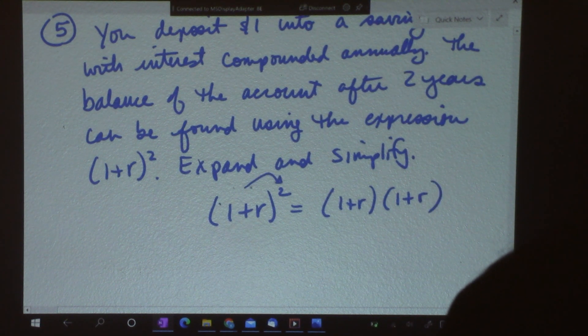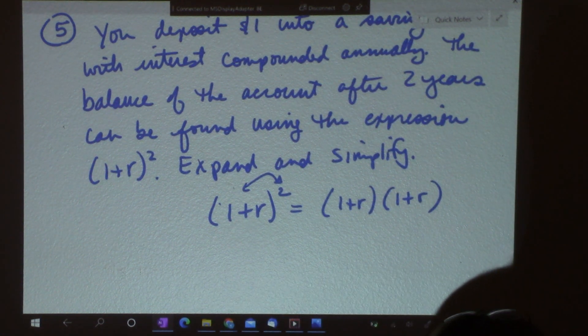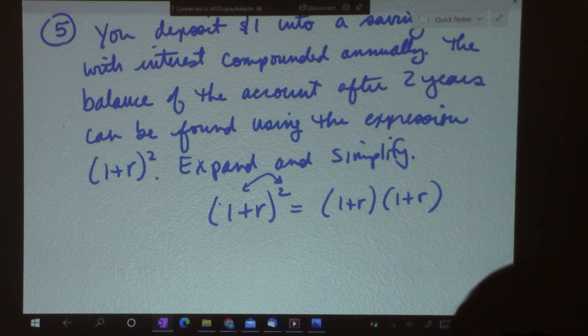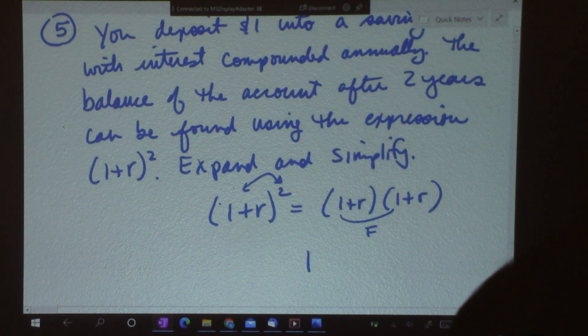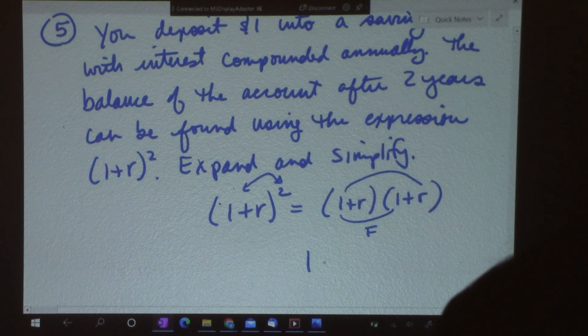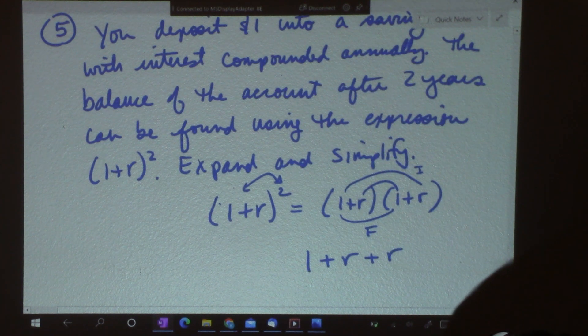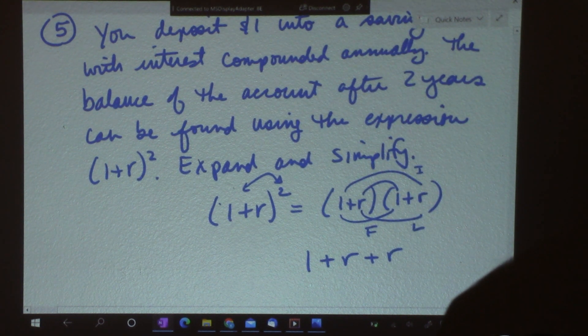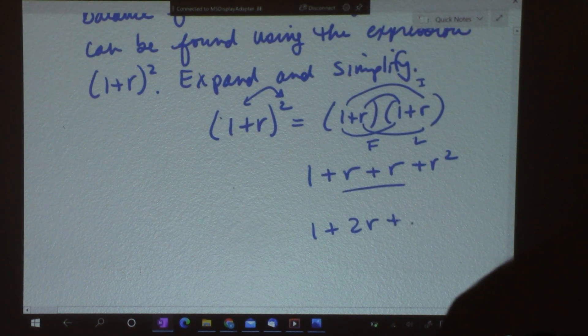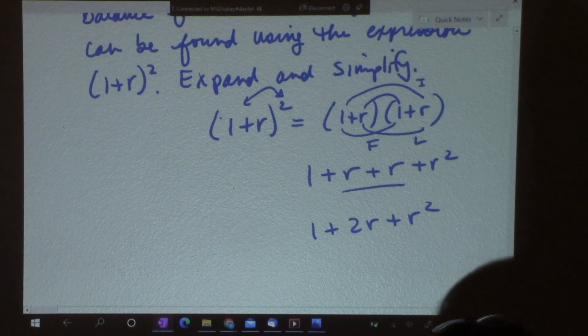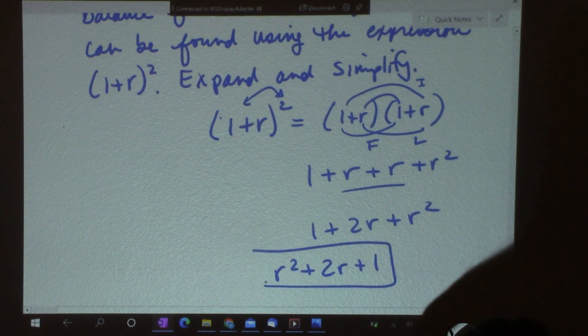So that means 1 plus r times 1 plus r. This whole thing is squared, right? So that means I've got the same thing two times. 1 plus r is multiplied by itself. So now I've got two binomials and I can use FOIL to figure it out. So 1 times 1 is 1. On the outside, 1 times r is r. On the inside, r times 1 is also r. And then on the last, r times r is r squared. And I can add the two in the middle. And I get 1 plus 2r plus r squared. Now usually I write it in standard form where I have my highest exponent first. r squared plus 2r plus 1.